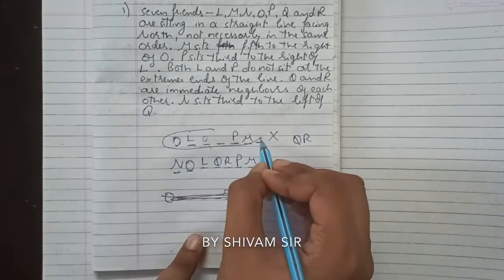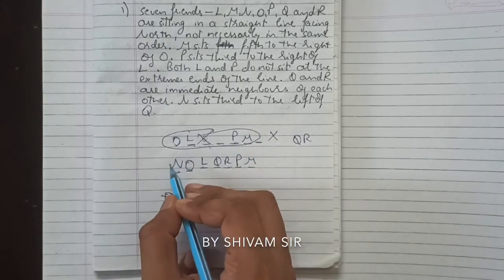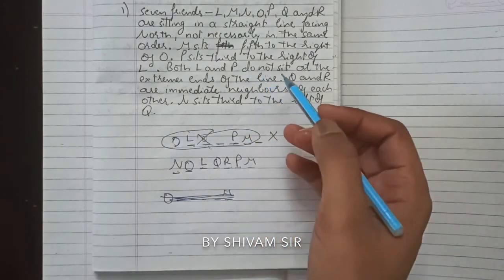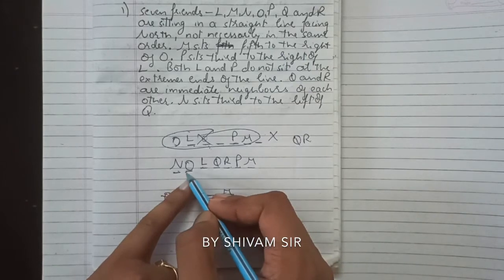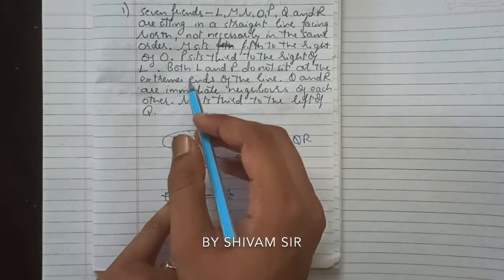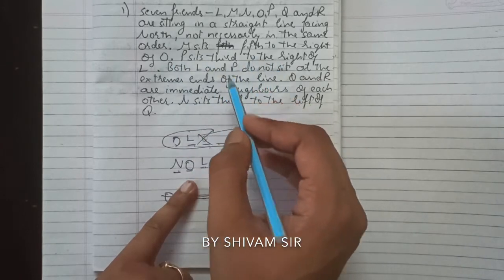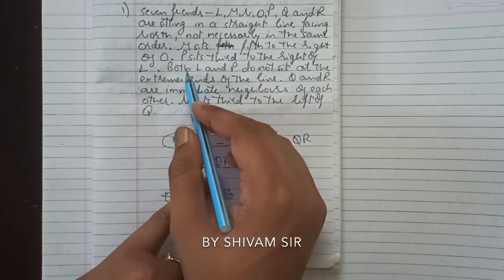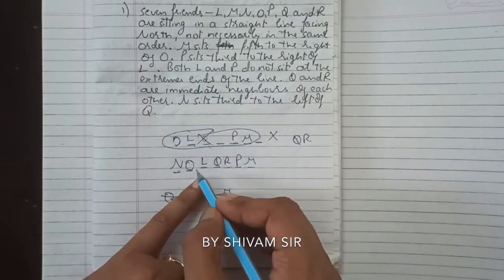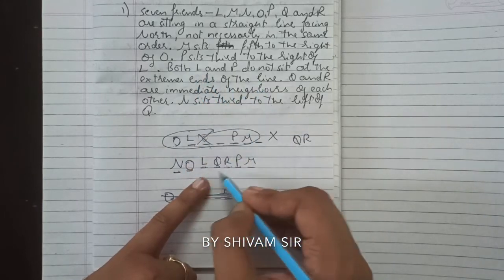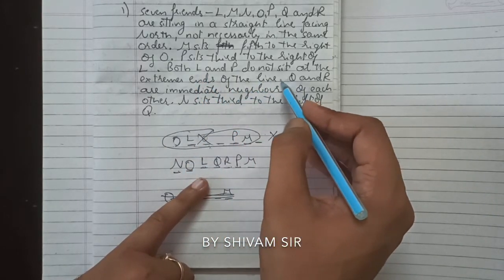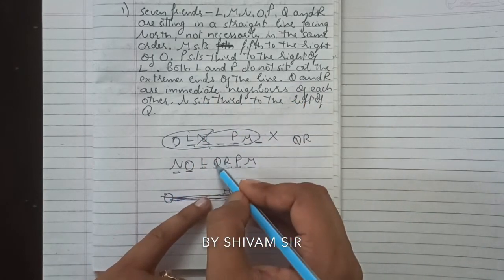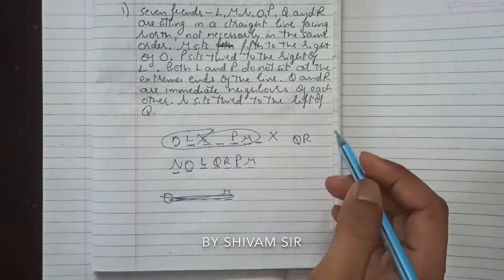Let's verify: M sits fifth to the right of O — O at position 1, 1,2,3,4,5 — M is at position 5. P sits third to the right of L — L is here, third to the right is P. L and P are not at extreme ends. Q and R are immediate neighbors. N sits third to the left of Q — 1,2,3 — confirmed. This is the correct arrangement.